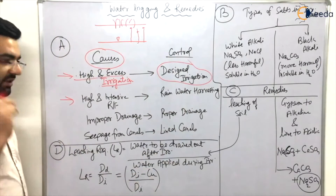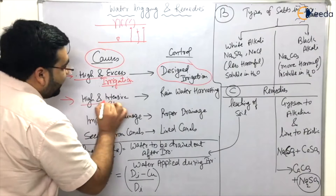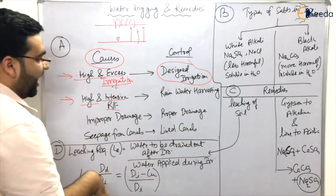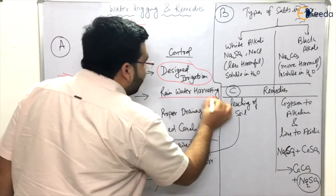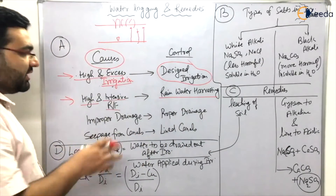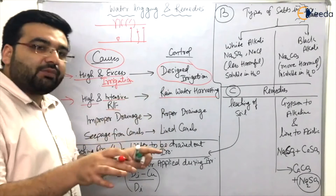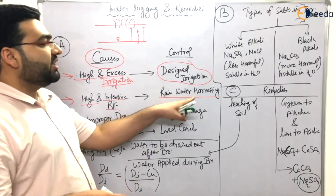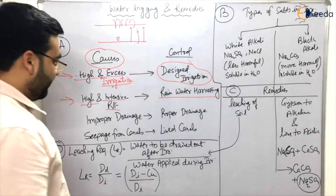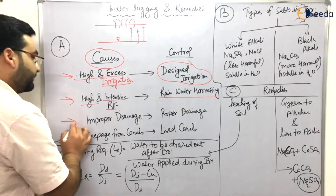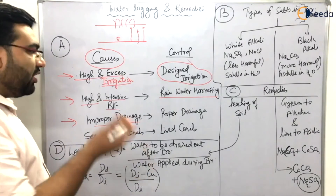The second cause is high rainfall in the catchment area, which can be controlled by rainwater harvesting. Rainwater harvesting is a homework topic for you — search it on Google and you will get a lot of knowledge. It is a very hot topic nowadays.